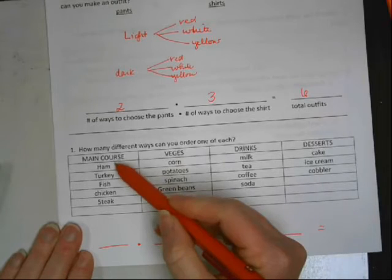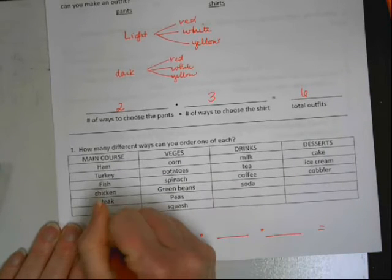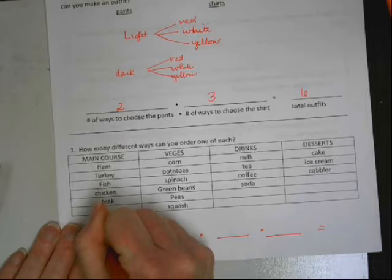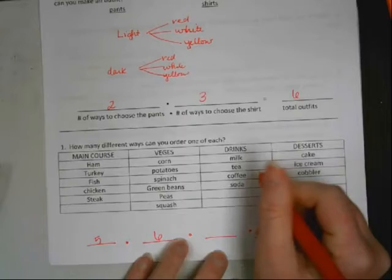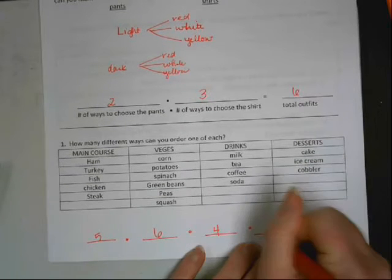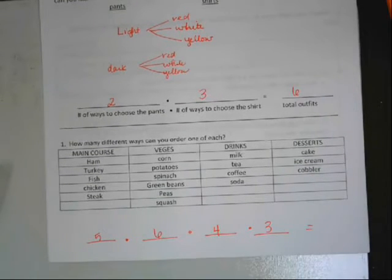So, how many different ways can I choose a main course? One, two, three, four, five. Five. Veggies. Six. Tricks. Four. Four. And then three. And then all you have to do is multiply those things. Three sixty. Thank you.